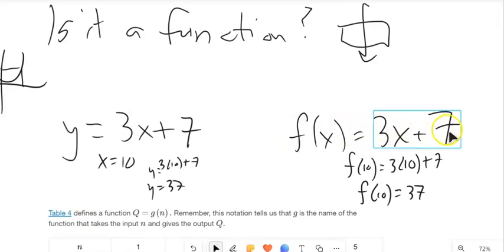Notice what this function, 3X plus 7, is doing. It's taking 10 as the input, and it's mapping it to 37 as the output. It's doing something to this number to have that number be the output.